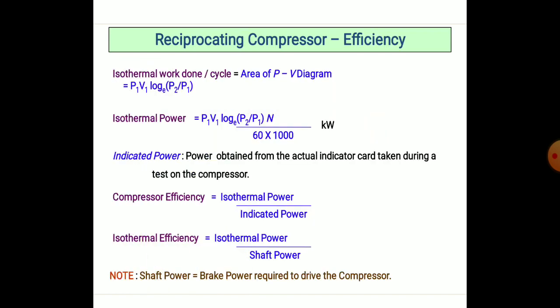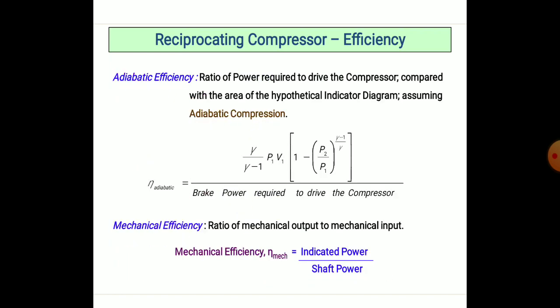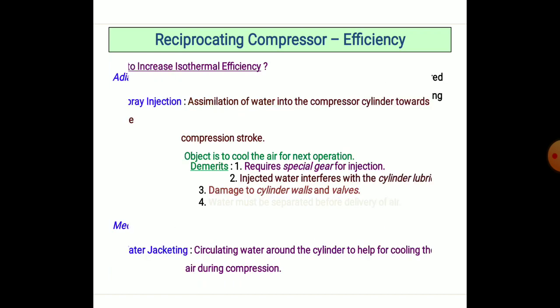Efficiency is the ratio of isothermal power to indicated power. Isothermal efficiency of shaft power is the brake power required to drive the compressor. The mechanical efficiency of the reciprocating compressor is the ratio of indicated power to shaft power.